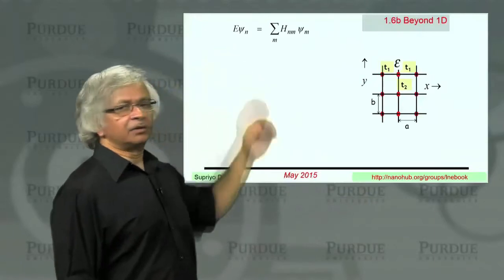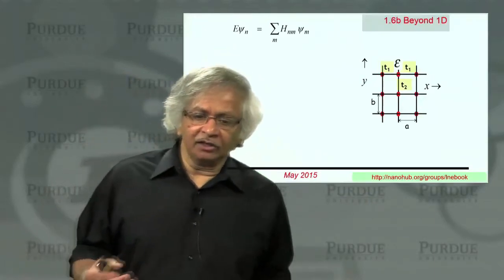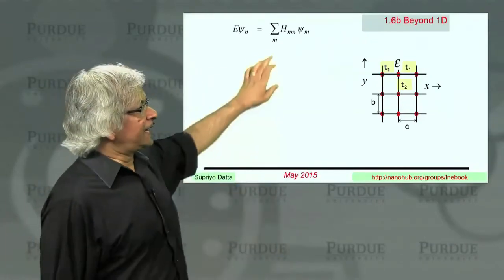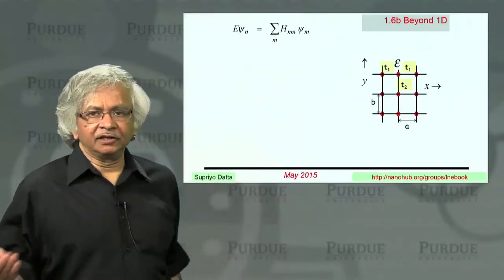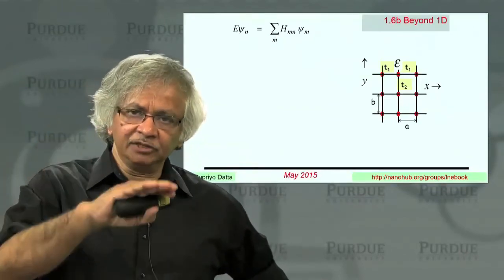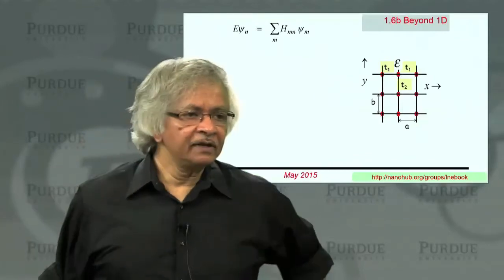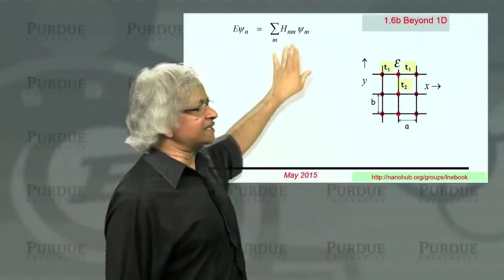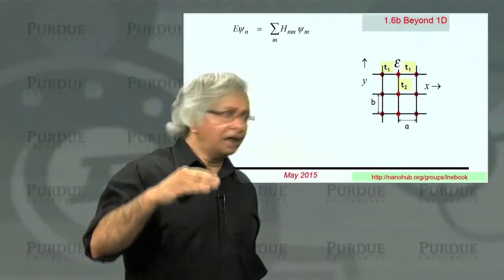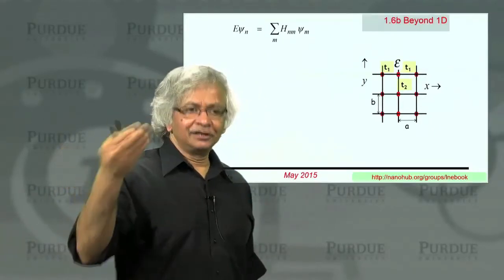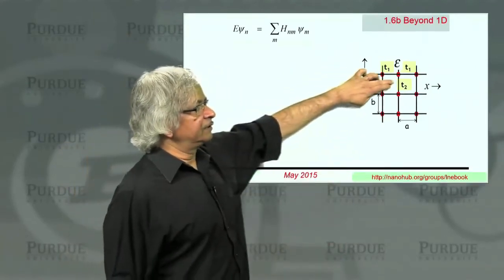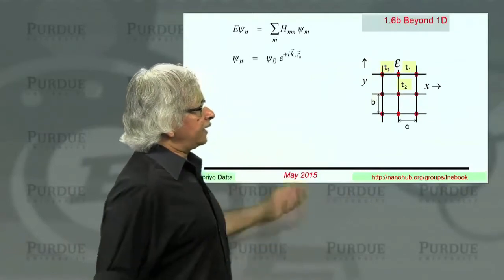So this is what the matrix equation would look like. In 1D also, we could have written it this way. In 1D, that summation actually had three terms in it, the diagonal term, and then epsilon, and then the T to the left, and the T to the right. Here, this summation has kind of five terms to it, a diagonal term, and then a T1 to the left, T1 to the right, T2 below, and T2 above.